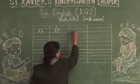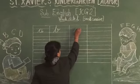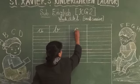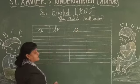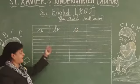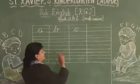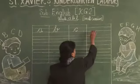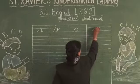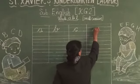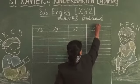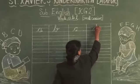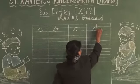After B, you will write C. C is for Cat. C is for Cake. After C, you will write D. D is for Duck. D is for Drum.